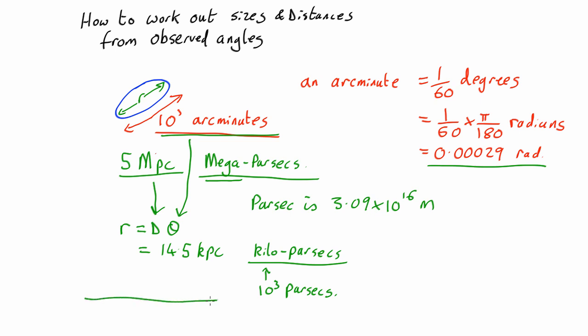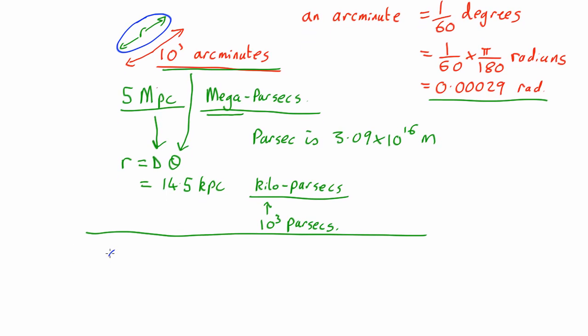So that's how we measure sizes of things. How about distances? Let's now imagine that there was a second galaxy, but this one was only a pathetic 1.6 arc minutes across. Very small.